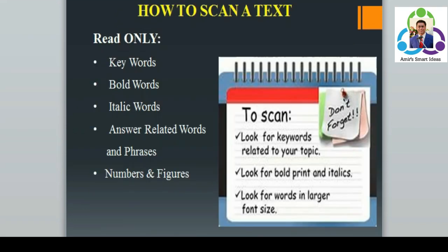Our next point is how to scan a text. ہم کس طریقے سے scanning کو text میں استعمال کر سکتے ہیں؟ Here are the tips. Number one: read only keywords — you don't have to read all words, only the most important ones. Number two: bold words — in typed text there are bold words, so you can easily locate them and scan a text with bold words only. Number three: italic words — words that are italicized indicate important points; you can rapidly go through them to find relevant information.